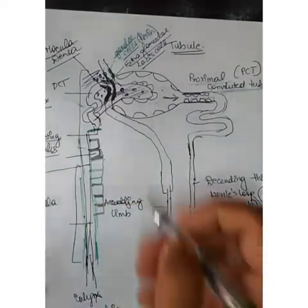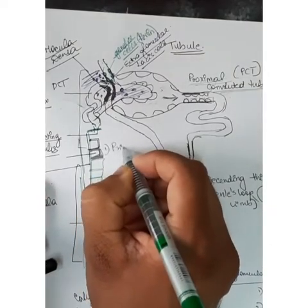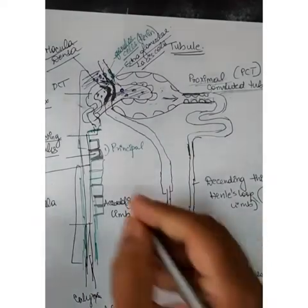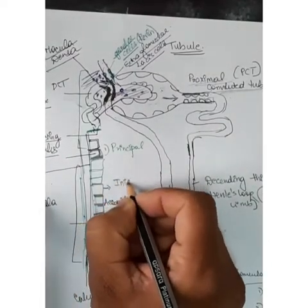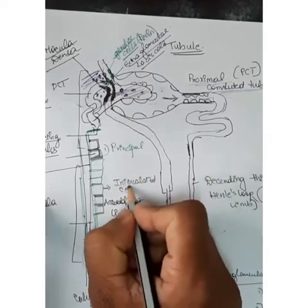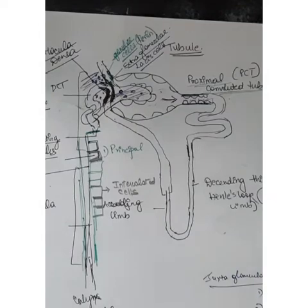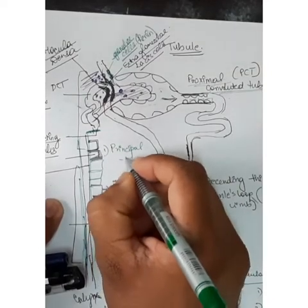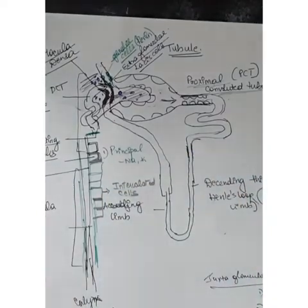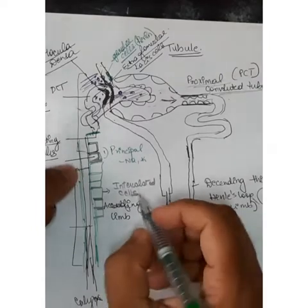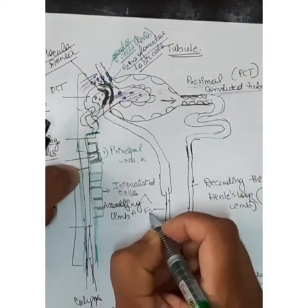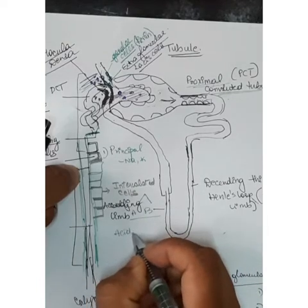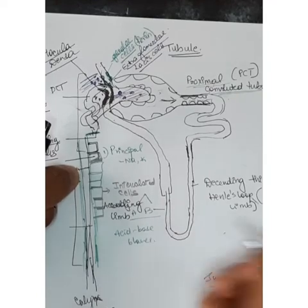These two cell types are: principal cells and intercalated cells. They are found from the late part of the distal convoluted tubule onward. Principal cells are important in the regulation of sodium and potassium — they help in sodium reabsorption and potassium secretion. Intercalated cells (type A and type B) are important in acid-base balance.